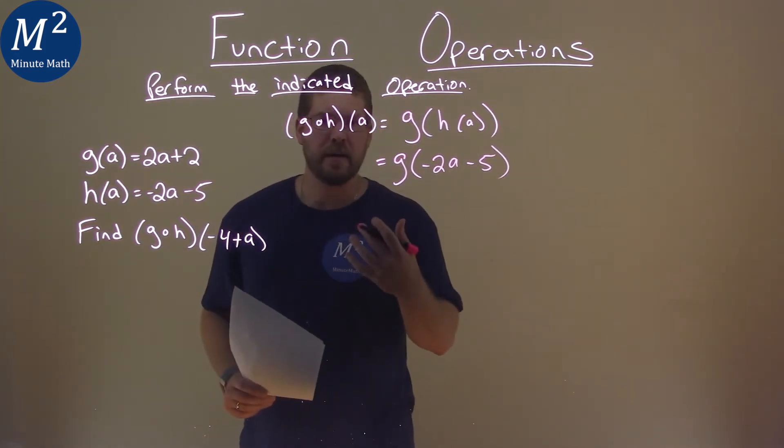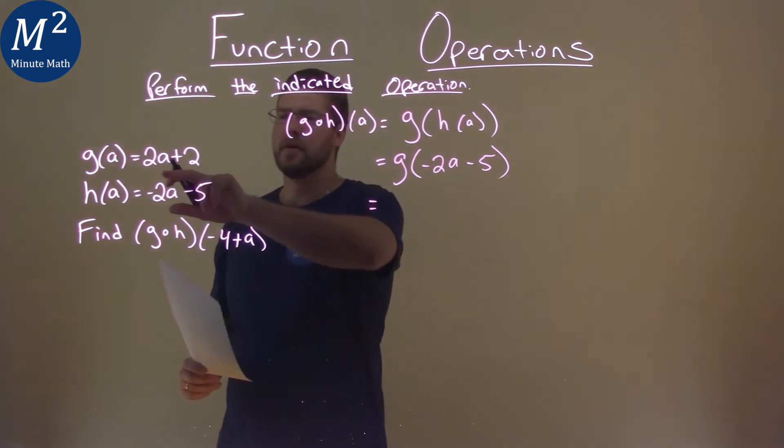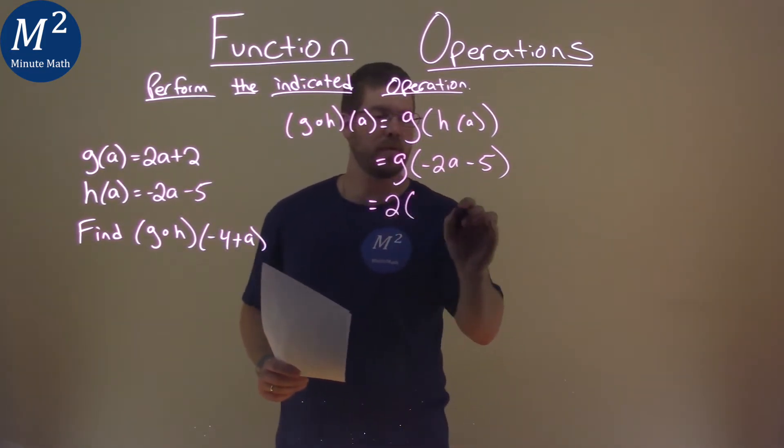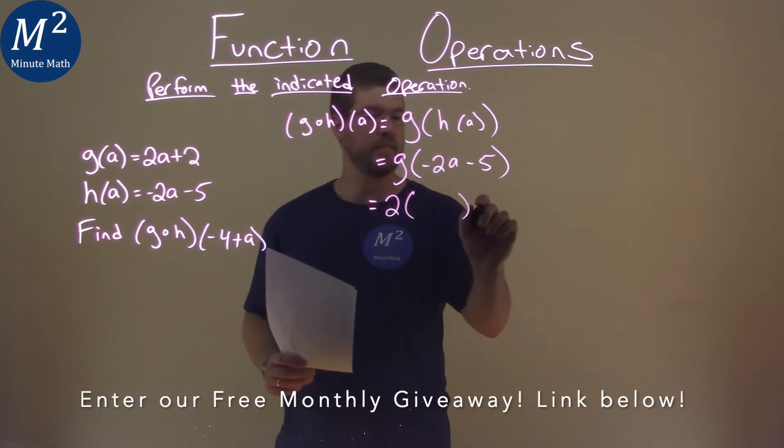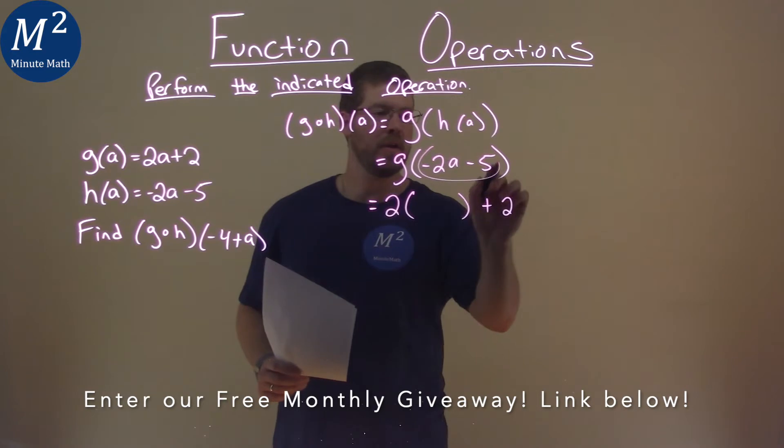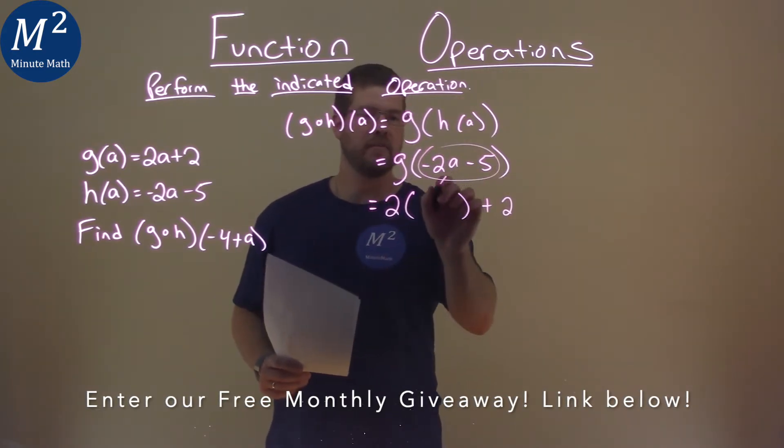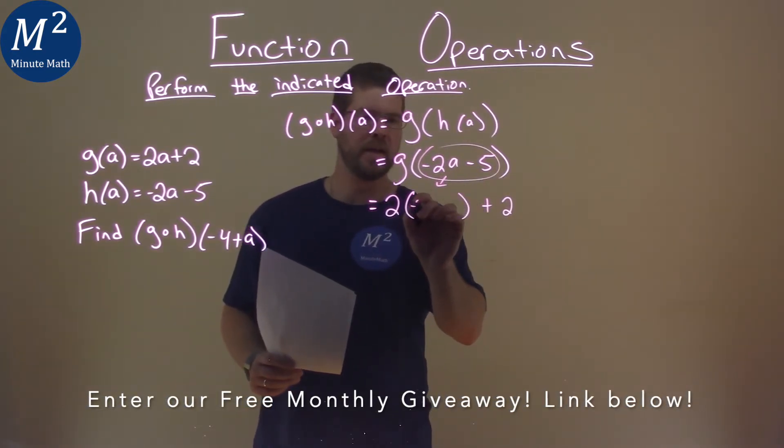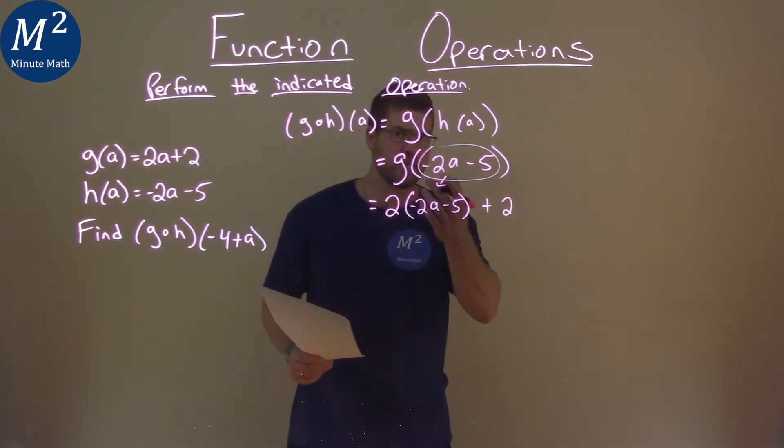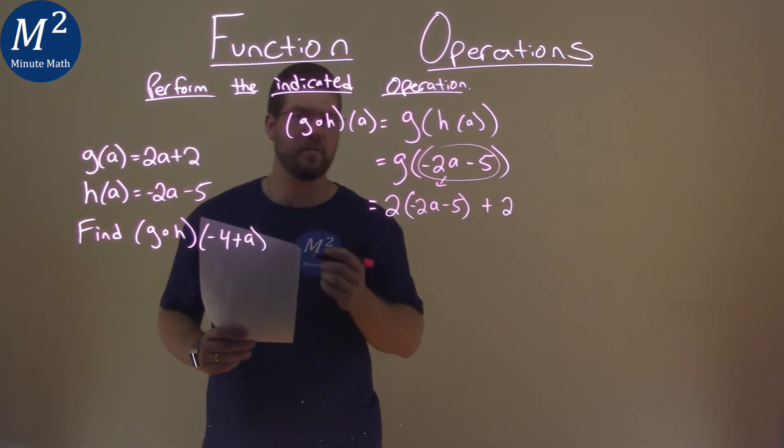Now, for our g of a. Well, our g function here is 2a plus 2. So, instead of an a, I'm going to put parentheses here, so 2a plus 2, and where the a should be, I'm going to put this whole negative 2a minus 5 in there. So we have a negative 2a minus 5 right there. Let's simplify this. Again, this is our g of h of a.